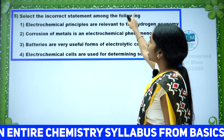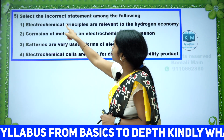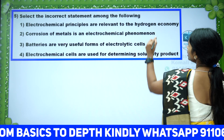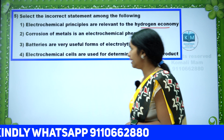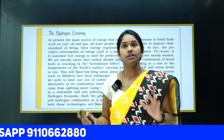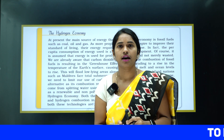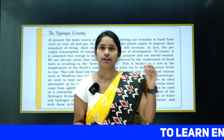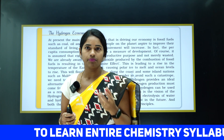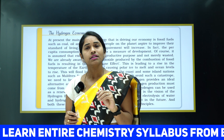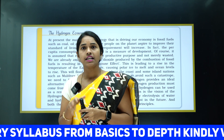See the next question: select the incorrect statement among the following. They are asking for the incorrect statement. First: electrochemical principles are relevant to the hydrogen economy. What is the hydrogen economy? There is a box in the NCERT electrochemistry chapter at the end — it explains that we currently use fossil fuels in thermal power plants to produce electricity, but the efficiency is only 40%.